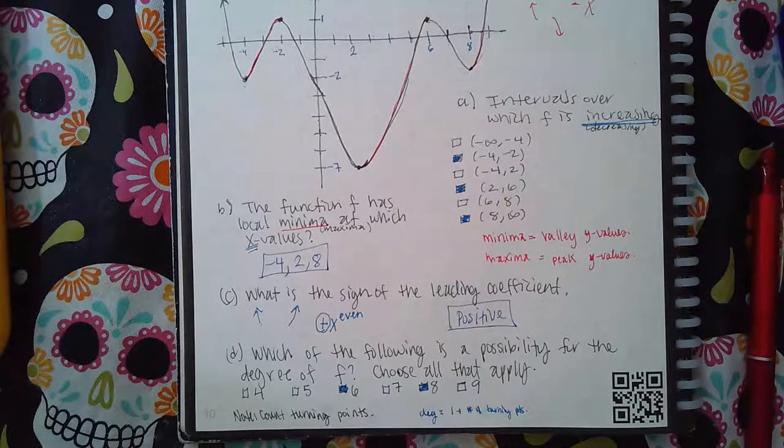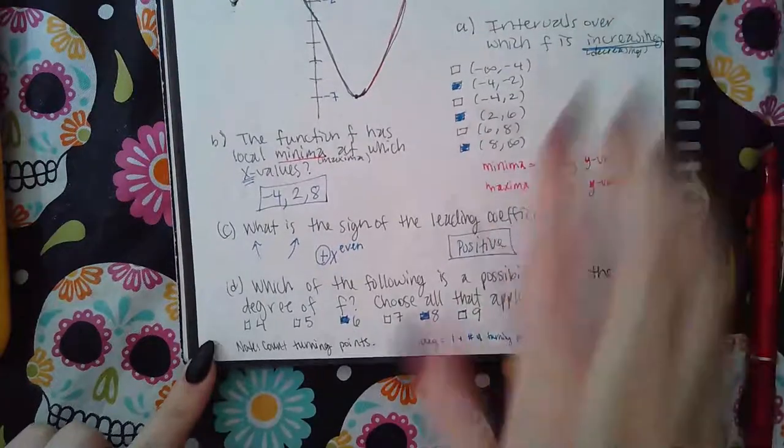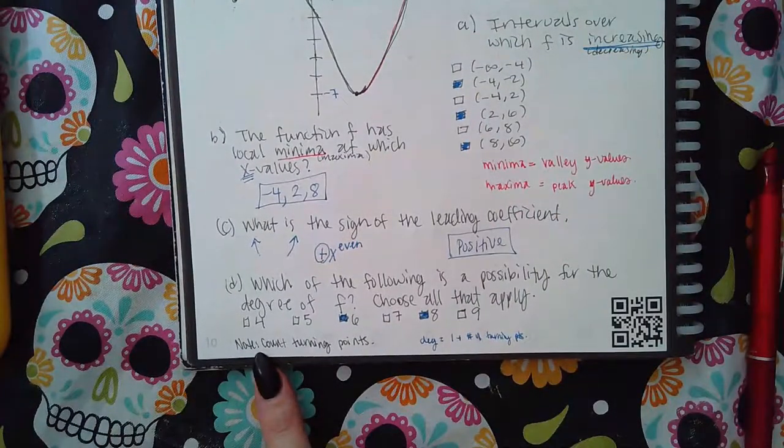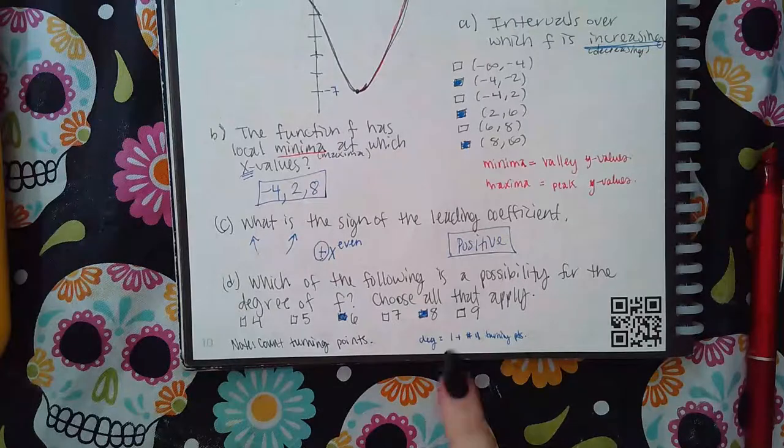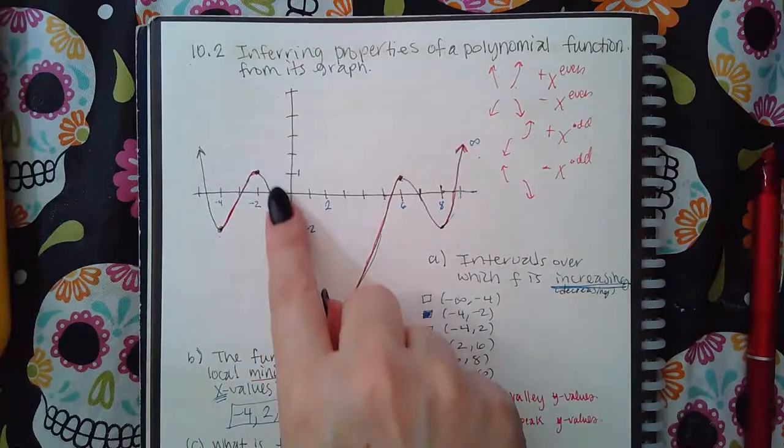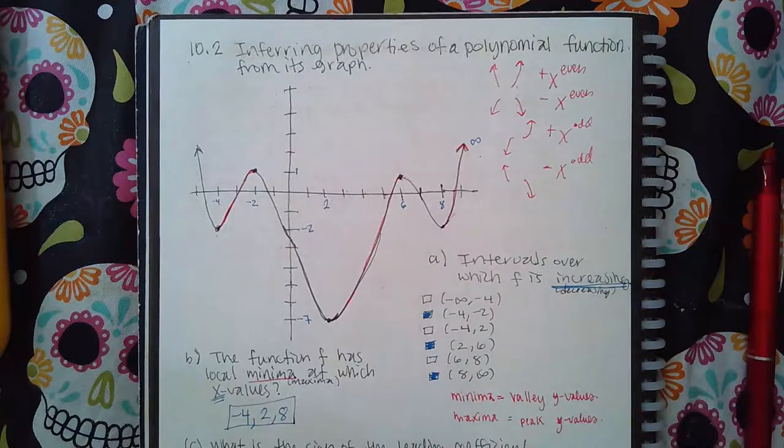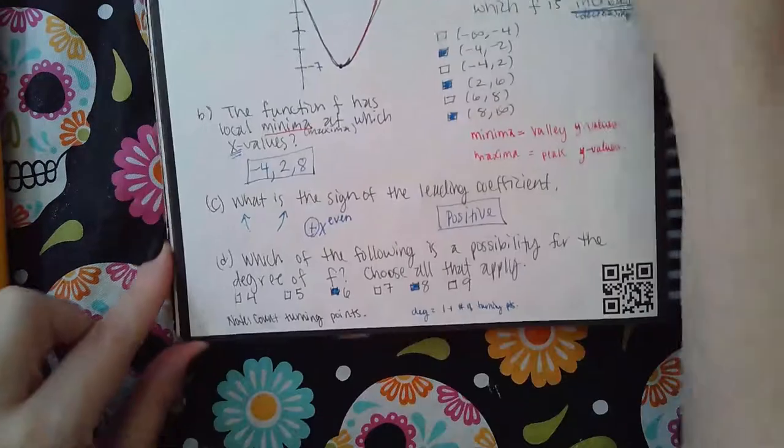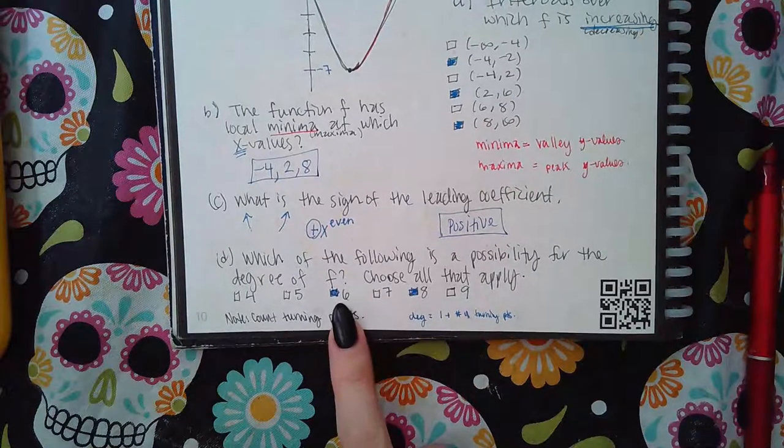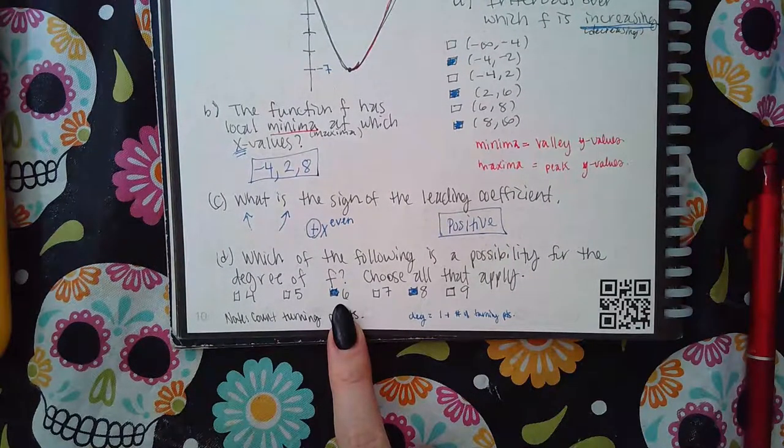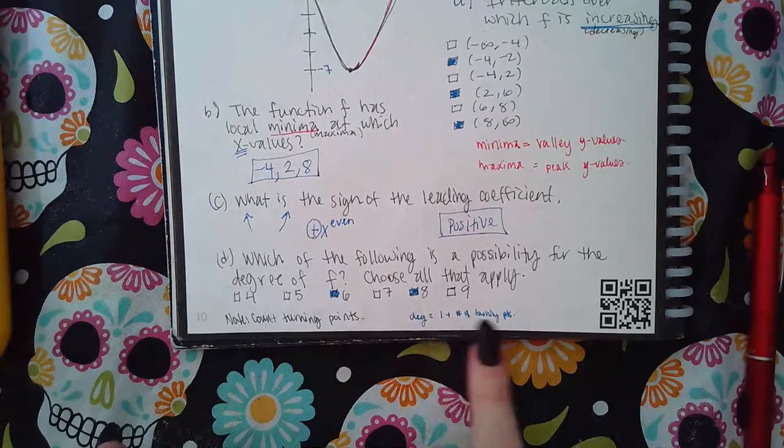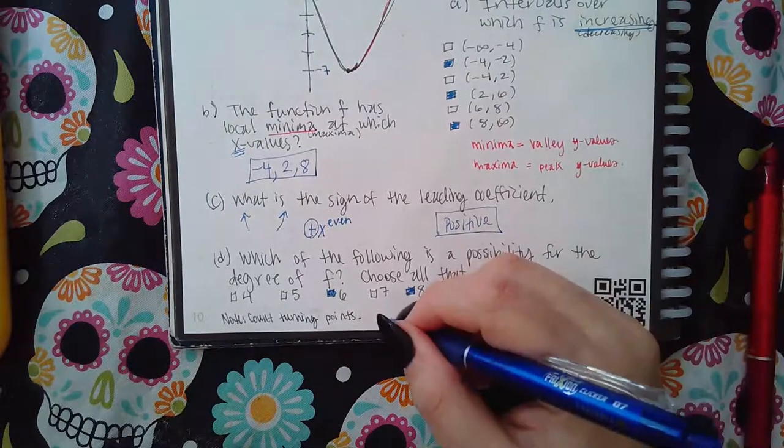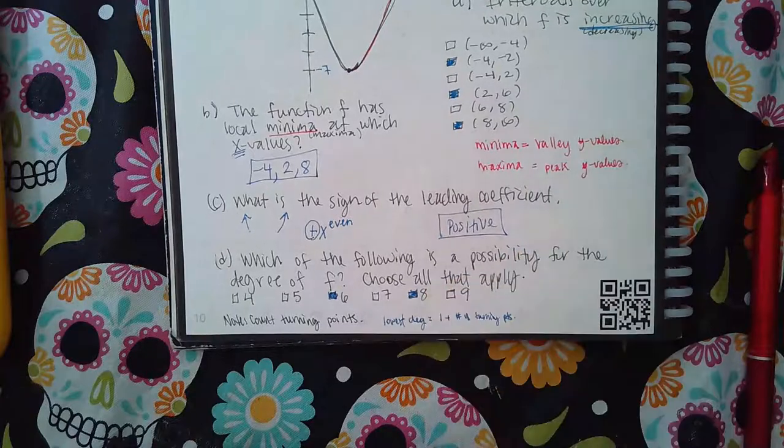Then it asked me which of the following is a possibility for the degree of f, choose all that applies. My suggestion is first start off by counting the turning points, and we're going to count the turning points. Your degree is going to be one plus the number of turning points you have. How many turning points do I have? I have one, two, three, four, five turning points in the whole graph. So if I add one, that means six. Six is the lowest degree that I could possibly have using this. I'll write that note: lowest degree is one plus the number of turning points.